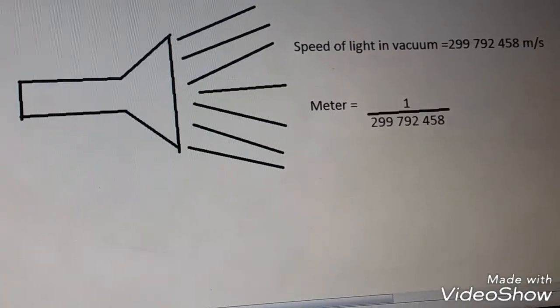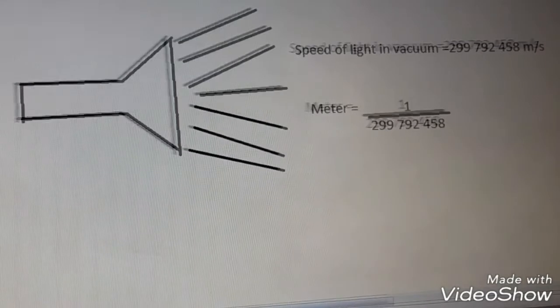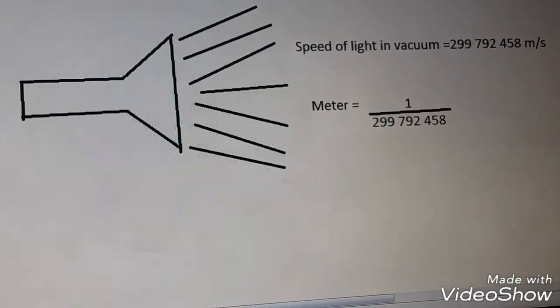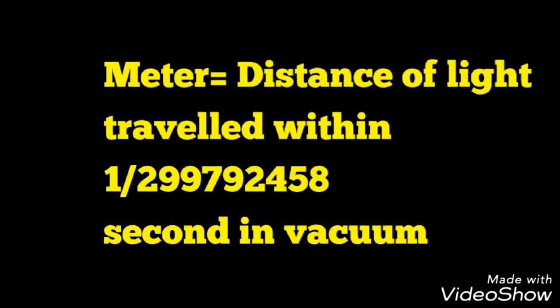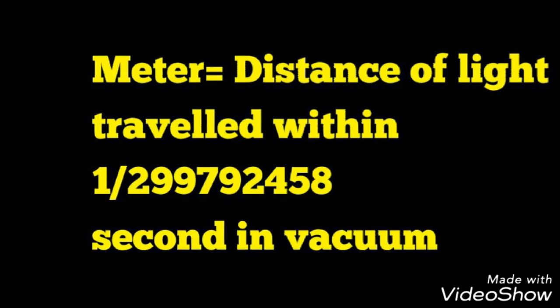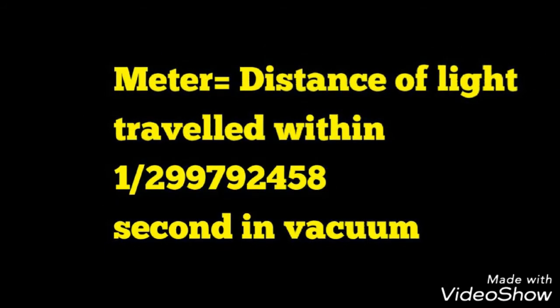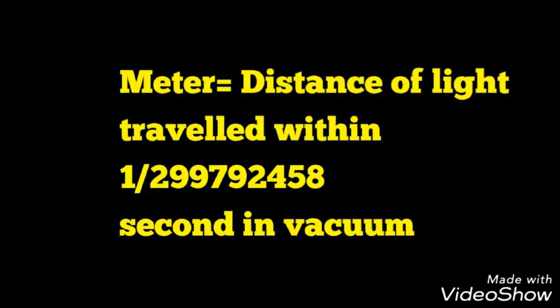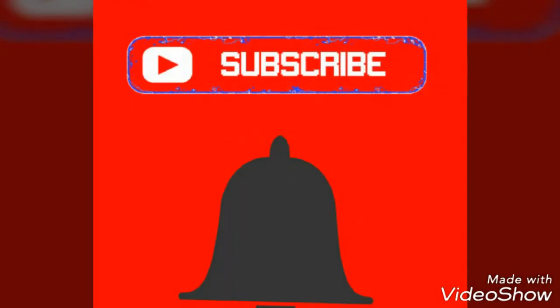Measurements of the speed of light had become extremely precise. So, it made sense to adopt the speed of light as a defined quantity and to use it to redefine the meter. That is, the meter is the length of the path travelled by light in a vacuum during a time interval of 1/299,792,458 of a second. I think you like this information.